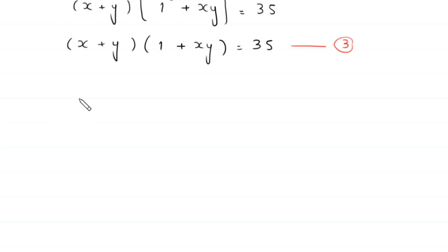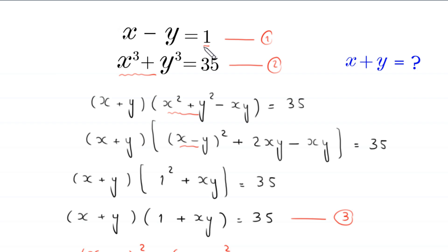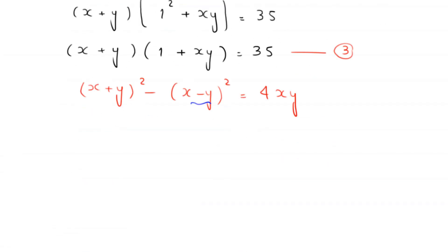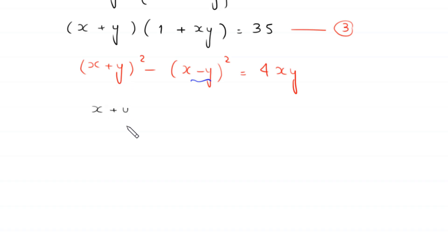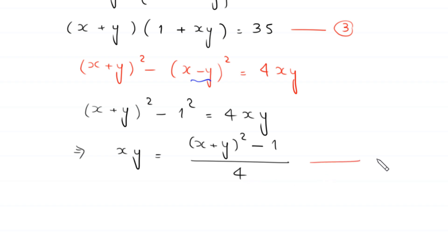Now we use the algebraic identity: x plus y whole squared minus x minus y whole squared equals 4xy. We replace x minus y with 1, so this becomes x plus y whole squared minus 1 squared equals 4xy. Dividing both sides by 4, we get xy equals x plus y whole squared minus 1, all divided by 4. Let's call this equation 4.